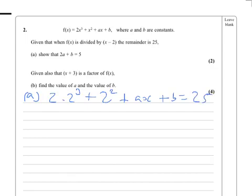That gives us 16 add 4 add ax add b equals 25. And so taking the 20 over to the other side, we get ax add b equals 5, and that's what we're supposed to get.